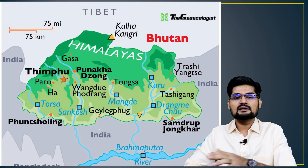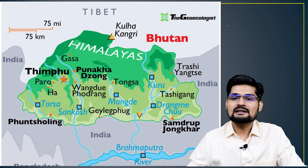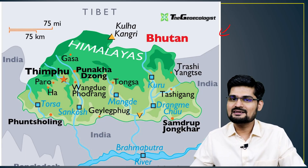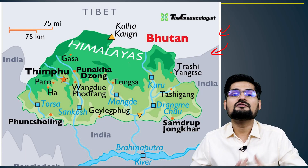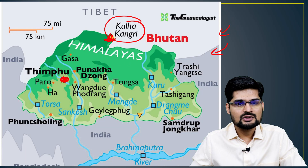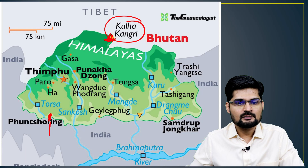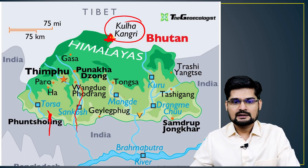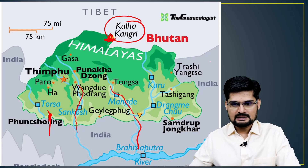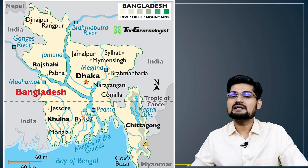Bhutan is a small landlocked country famous for its happiness index and ecological friendliness. Thimphu is the capital, and it is connected to India through Phuntsholing. The Sankosh River and the Mangli River project join the Brahmaputra.